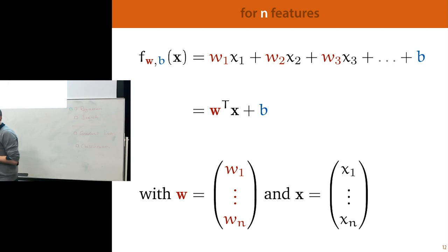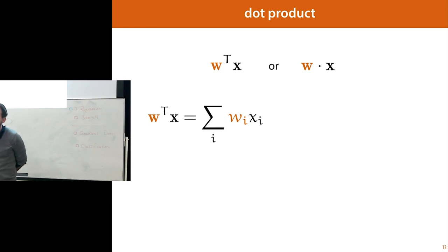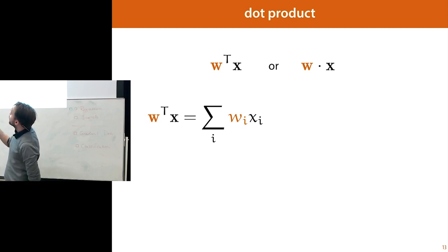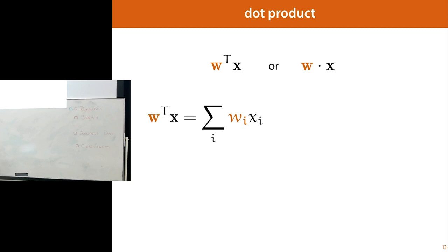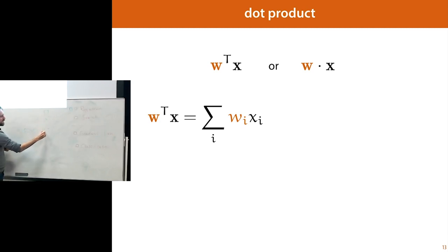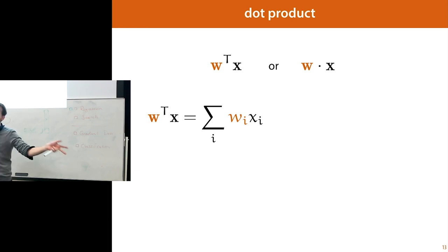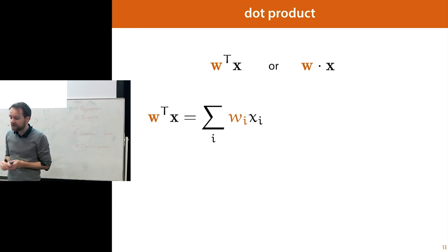This dot product function is very important — it's going to come back a lot. You can write it either with a dot notation or like this. I like the superscript T notation because it's basically matrix multiplication: you're taking a column vector and multiplying it by a row vector, which is the transpose of W. What you get is every element of W multiplied by its corresponding element of X, and these all sum together. That's just a dot product — a very simple but very useful function.